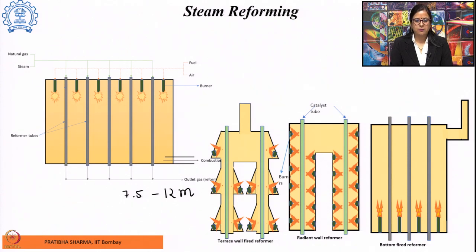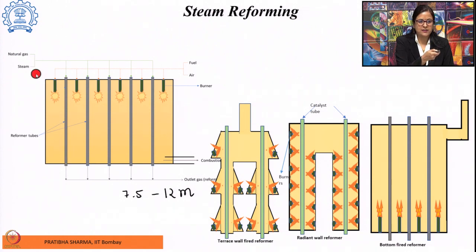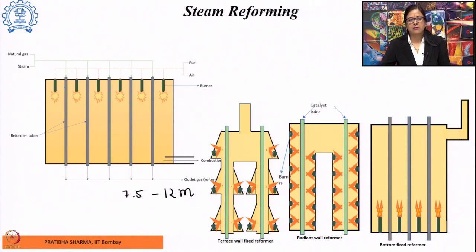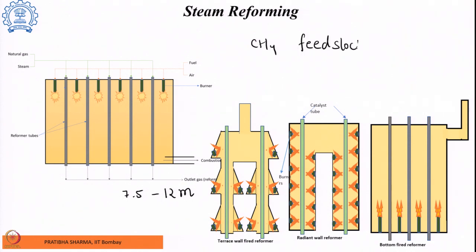Irrespective of the geometry, these tubes carry catalyst. Preheated natural gas along with steam passes through the catalyst-filled reformer tubes, thereby producing syngas. In this process, methane acts as both feedstock and fuel — it is used for burning in the burners. The fuel-air mixture combusts in the burners, providing the required heat for the reaction to take place.